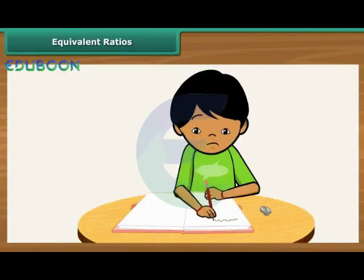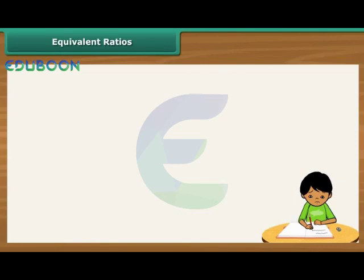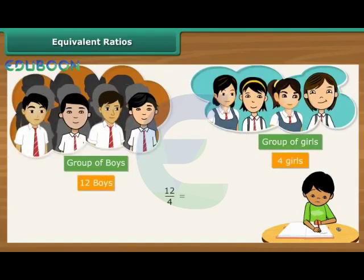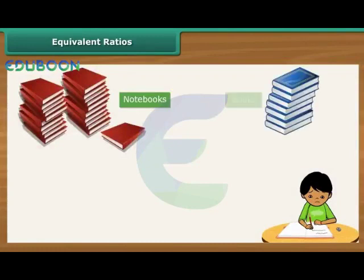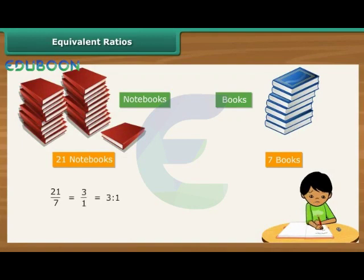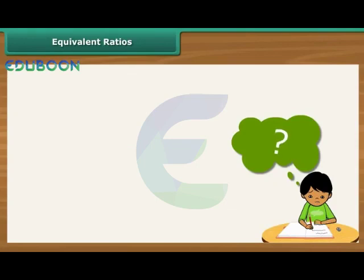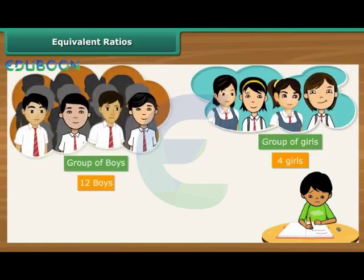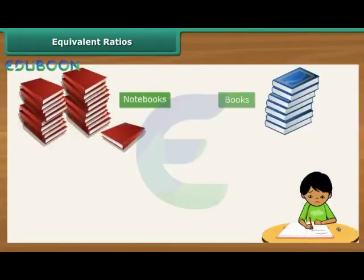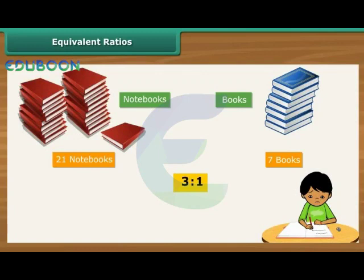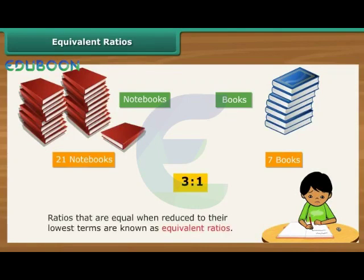Equivalent ratios. Ritesh is learning to calculate ratios and is enjoying it, but there is one thing that is confusing him. He first calculated the ratio of boys to girls in his class as 3 is to 1. He then calculated the ratio of notebooks to books in his bag, and the ratio also works out to be 3 is to 1. Ritesh wonders: can two ratios be the same? Yes, they can. The first tells us that boys are 3 times more than the girls. The second tells us that the notebooks are 3 times more than the books. Ratios that are equal when reduced to their lowest terms are known as equivalent ratios.